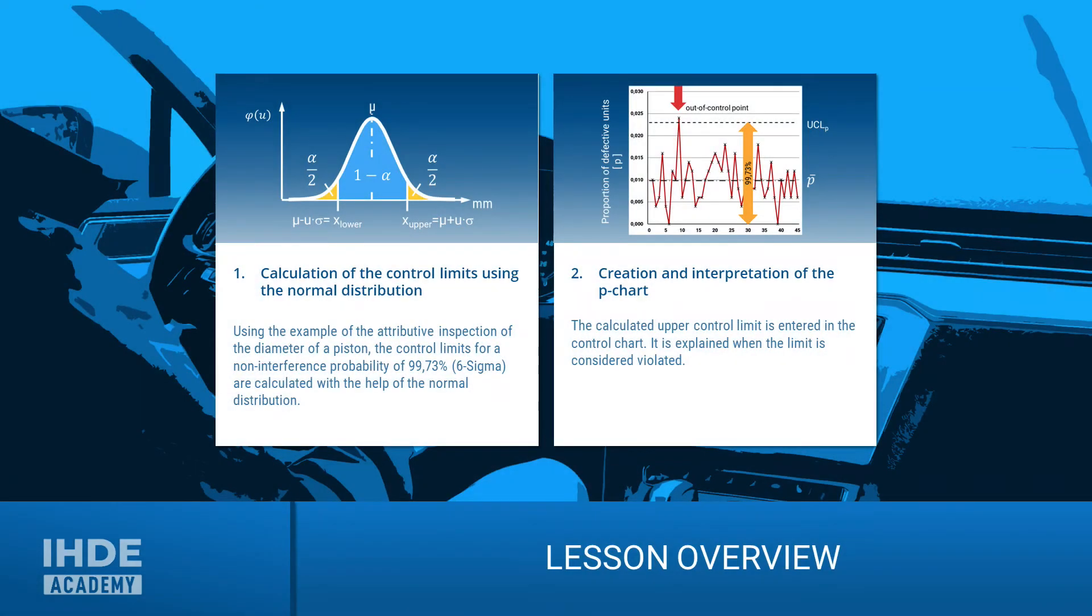This lesson is divided into two chapters. In the first chapter, we will use the normal distribution to calculate the control limits for a non-interference probability of 99.73%. And in the second, enter this limit in the control chart and discuss how it is to be interpreted.